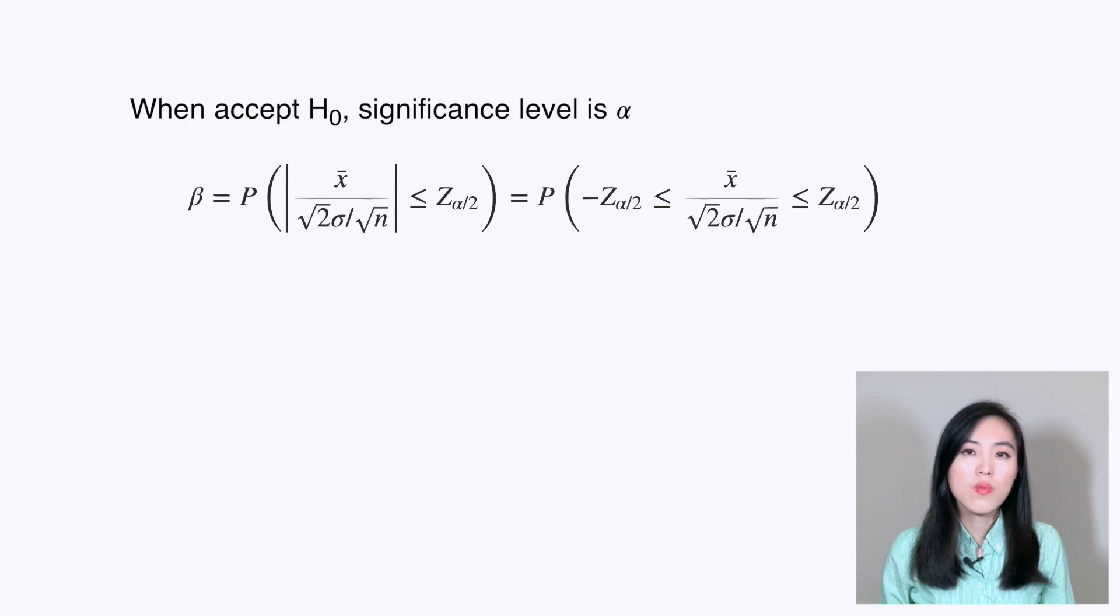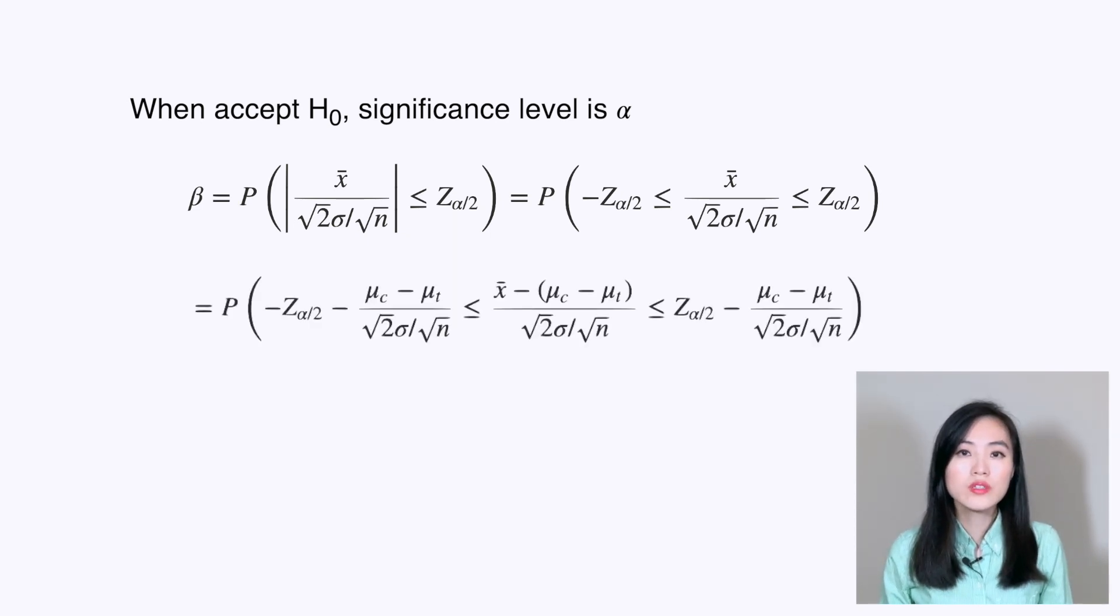Now think about when we accept H₀, given that the significance level is α. It's when the absolute value of Z is less than or equal to z_{α/2}. We can rearrange this inequality by subtracting terms on both sides so that the middle part matches the standard normal variable Z.